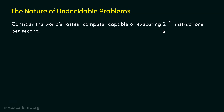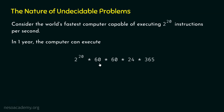Now let's calculate how many instructions our computer is capable of executing in one year. In one year, the world's fastest computer can execute 2 to the power of 20 multiplied by 60 × 60 × 24 × 365, where 60 × 60 × 24 × 365 represents the number of seconds in one year. By multiplying these together, we get the number of instructions the computer can execute in one year. In order to simplify the calculation, let's represent these numbers as powers of 2.